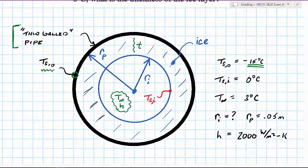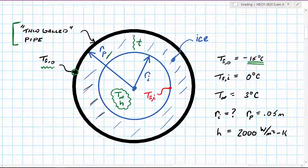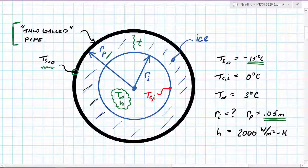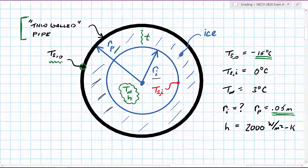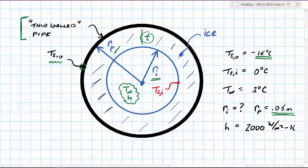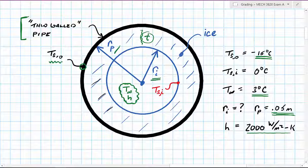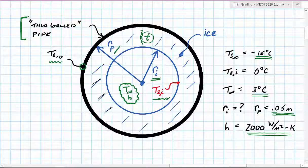That defines the cylindrical geometry. We have a defined pipe radius given as 50 millimeters, which we convert to SI units as 0.05 meters. The radius of the inner layer of the ice is unknown, so R_pipe minus R_ice gives the thickness of the ice layer. We're also told liquid water is flowing inside at T-infinity of 3 degrees Celsius, with a convective heat transfer coefficient of 2,000 watts per meter squared per Kelvin. At the ice-water interface, the temperature of the inner surface is 0 degrees C.